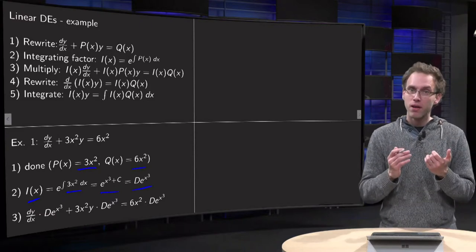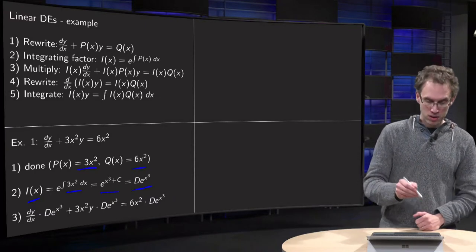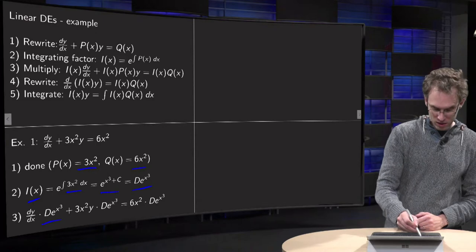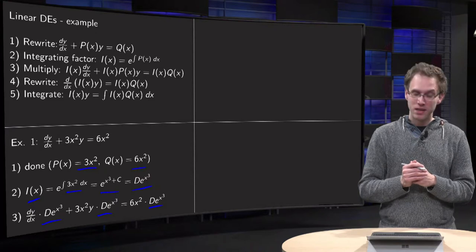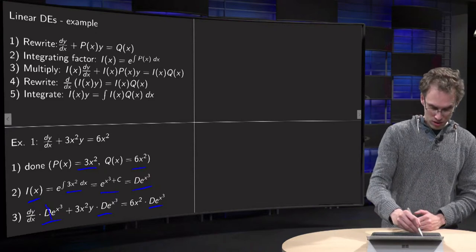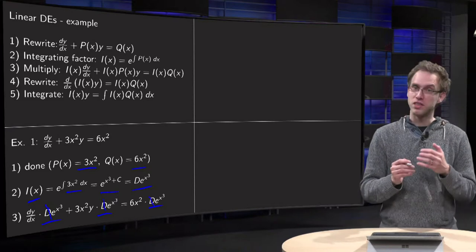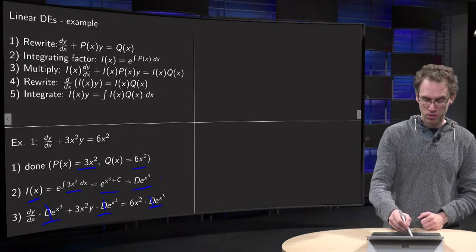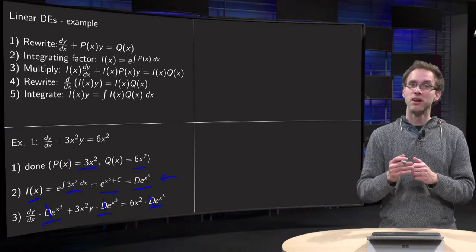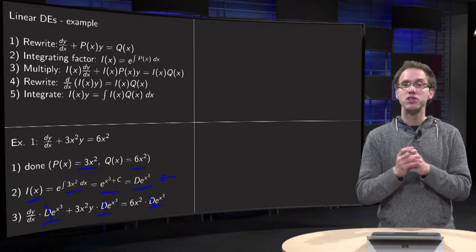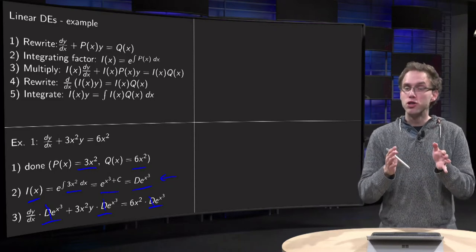Then third step, multiply your equation by the integrating factor. So here we have our integrating factors everywhere. And now you see that d immediately drops out. So actually you could have set d to 1 in the first place or you could have set c to 0 already in step 2. So if you compute your integrating factor, you can put the c constant to 0 because in the next step it will drop out anyway.